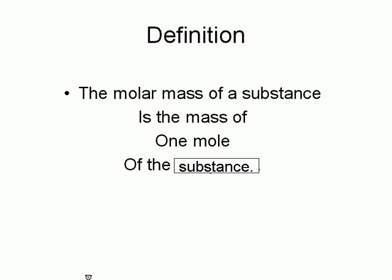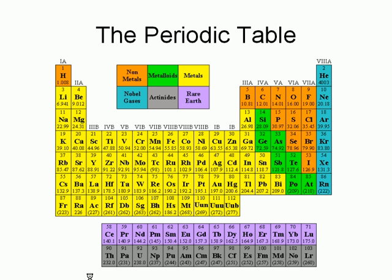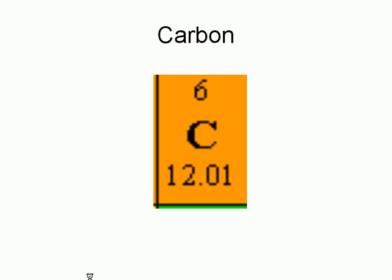The molar mass of a substance is defined as the mass of one mole of the substance. The mass of one mole of atoms of an element can be looked up from the periodic table. For example, the molar mass of carbon is 12.01 grams per mole. This means that one mole of carbon atoms weighs 12.01 grams.